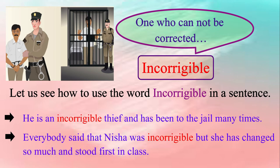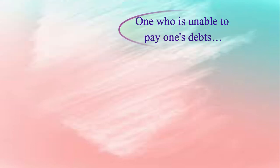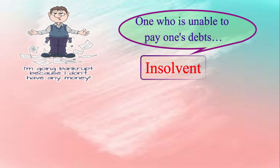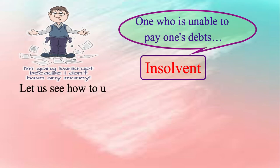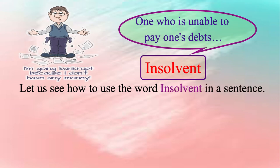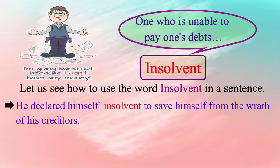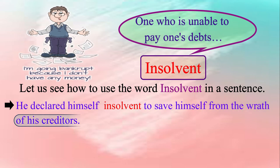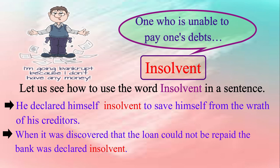Let us see the next expression. One who is unable to pay one's debts, or we can simply say insolvent. Insolvency is the state of being unable to pay the money owed by a person or company on time. Those in a state of insolvency are said to be insolvent. Let us see how to use the word insolvent in a sentence. Please repeat after me: He declared himself insolvent to save himself from the wrath of his creditors. When it was discovered that the loan could not be repaid, the bank was declared insolvent.